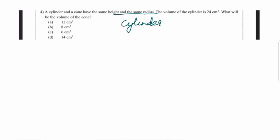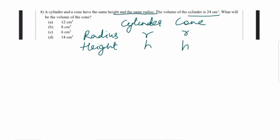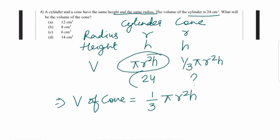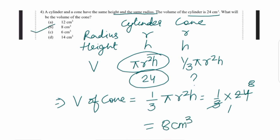Question number 4: a cylinder and a cone have the same height and the same radius. The volume of the cylinder is 24 cm³. So π r² h = 24. Volume of cone = 1/3 π r² h. Since π r² h = 24, volume of cone = 24/3 = 8 cm³. So 8 cm³ is the correct answer, option B.